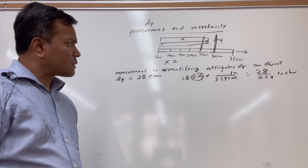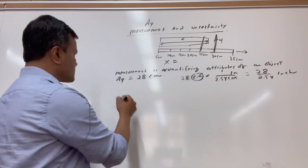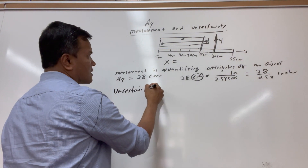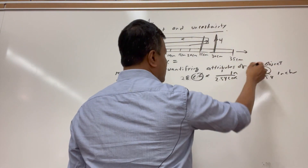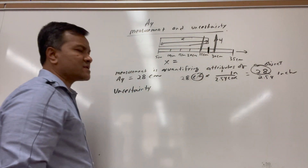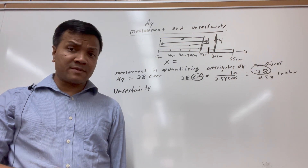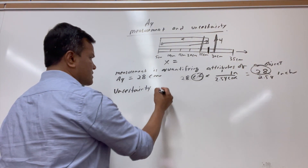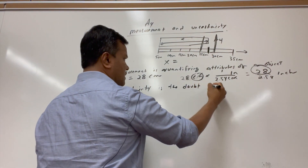Now I also want to talk about uncertainty. What is uncertainty? This estimate of 28 is not precise — I can do much better. If I put a ruler, I have access to centimeters and millimeters. Uncertainty is the doubt in the measurement.